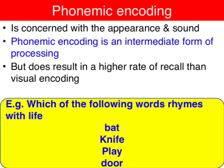Moving on to phonemic encoding — starting with the example at the bottom: which of the following words rhymes with 'life'? Not only do we visually scan the words but we sound out the four words — bat, knife, play, and door — and we can clearly hear by the sound that 'knife' does in fact rhyme with 'life.'